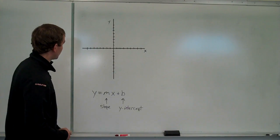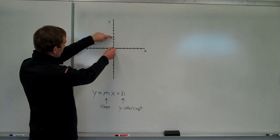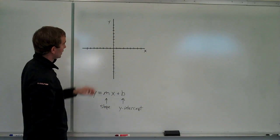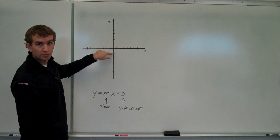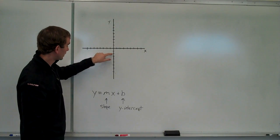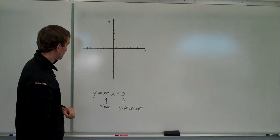So for example, if I had a line that crossed the y axis right here at four units above the origin, the y intercept is just four. If it crosses at two points below the origin, then we know that the y intercept is negative two. It's two below the origin.